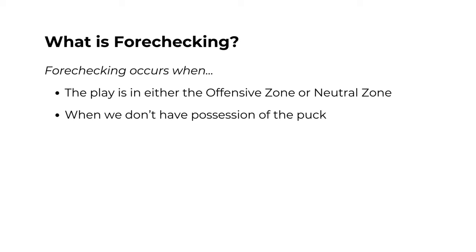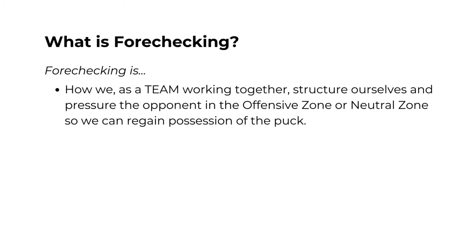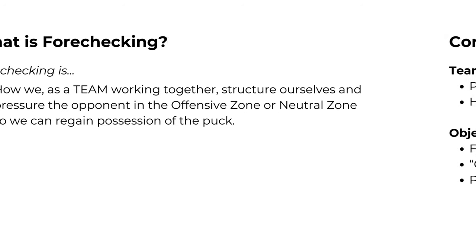Forechecking occurs when the play is either in the offensive zone or the neutral zone and we do not have possession of the puck. Forechecking is how we, as a team working together, structure ourselves and pressure the opponent in those zones so that we can regain possession of the puck.